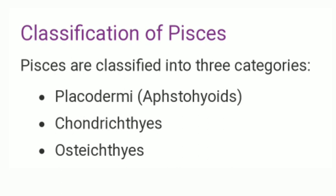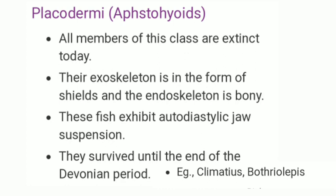Now we will discuss the classification of superclass Pisces into three categories: first is Placodermi, second is Chondrichthyes, and third is Osteichthyes. Placodermi — all members of this class are extinct today. Their exoskeleton is in the form of shields and endoskeleton is bony. These fishes exhibit autodiastolic jaw suspension and survived until the end of the Devonian period. Examples include Climatius and Bothriolepis.